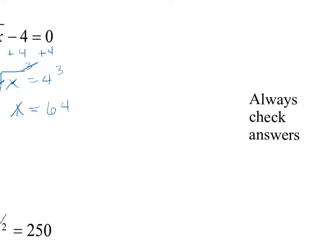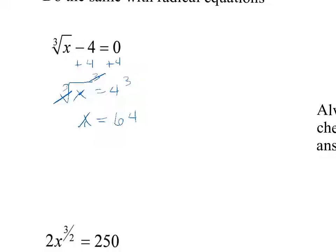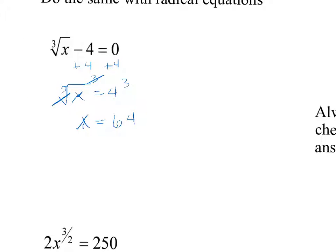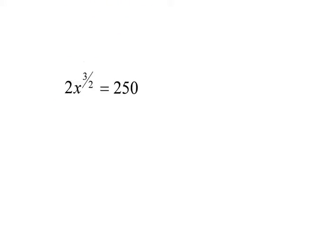You always want to check your answers, because there are going to be times where your answer doesn't actually work when you go back to check. It's not that you did your math wrong — it's just that we sometimes get answers that don't work. So I plug in 64: the cubed root of 64 is 4, and 4 minus 4 is 0. This one works out, so we can keep our answer.